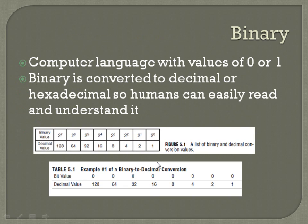So, binary language, as we talked about last time — it's values of 0 and 1, off and on, because they're having to use transistors to relay this information. Binary is converted to decimal or hexadecimal so humans can easily read and understand it. And right down here we've got powers of 2 corresponding to the decimal value. Since it's 0 and 1, you've only got two values, so that's why you've got powers of 2.